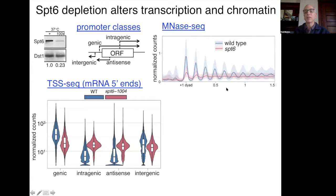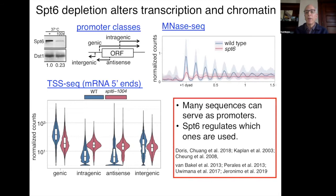After SPT6 depletion we see a drastic effect — a loss of nucleosomes and fuzzier nucleosomes, so positioning is not as great either. To summarize: in a eukaryotic genome many sequences are able to serve as promoters, but in normal cells SPT6 plays a huge role in regulating which promoters are used. We see a large number of intragenic and antisense promoters that would otherwise be repressed.